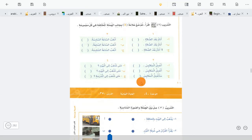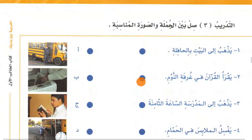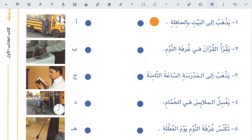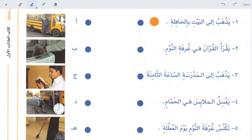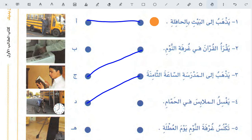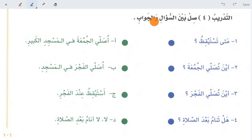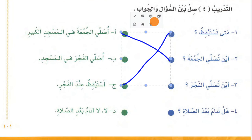Now he is asking you to join the sentence with the appropriate picture. He goes to the house by bus — in two pictures we see a bus, so for the time being I will join it with the first one. Yakhra'ul-Qur'ana fi ghurfat in-nawm — he reads the Quran in the bedroom, so in that picture he is reading Quran. Yazhabu ilal-madrasati as-sa'at ath-thamina — he goes to school at 8 o'clock; in that picture we see 8 o'clock, so I have joined them. Then he is asking you to join the question with the answer. When do you wake up? Indal-fajr — I wake up at fajr. Where do you pray jumu'ah? Usalli al-jumu'ah fil-masjid al-kabir.